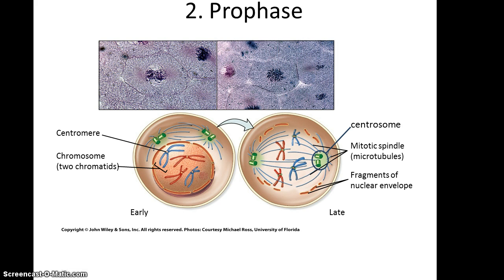When you enter prophase, the nuclear membrane — the nuclear envelope — will break down. The DNA will condense to form chromosomes, and the centrioles will migrate to opposite sides of the cell. The centrioles will then start to produce mitotic spindles, which are formed of microtubules.